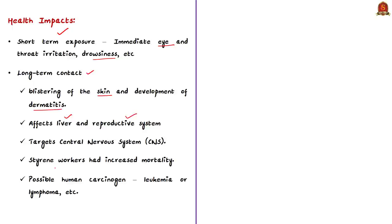For example, decreased frequency of births and increased frequency of spontaneous abortions in female workers have been reported. More importantly, styrene targets the central nervous system. Studies also found that styrene workers had increased mortality. It is said that styrene is possibly a human carcinogen — that is, it causes cancer in humans such as leukemia or lymphoma. This is the background about styrene, its uses, and health consequences.